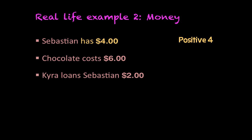So now Sebastian has the money to buy the chocolate: four plus two equals six. But what does that mean? It means that Sebastian owes Kyra two dollars, or we can say that Sebastian is negative two.